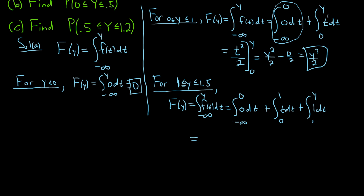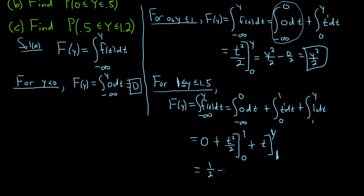Evaluating: the first piece is 0. The second piece gives 1 squared over 2 minus 0 equals one half. The third piece gives y minus 1. So altogether: one half plus y minus 1, which simplifies to y minus one half. So for y between 1 and 1.5, F(y) = y − 1/2.